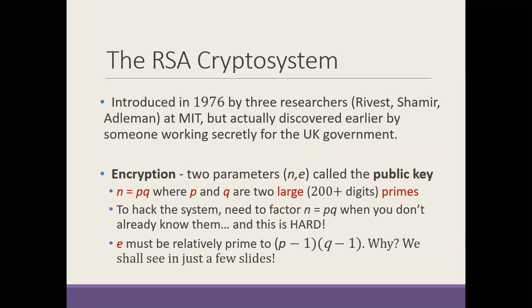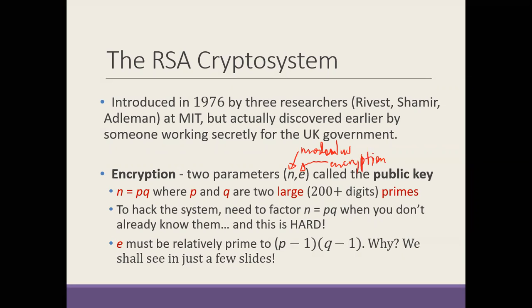Here's how RSA works. You have two parameters, n and e, that you call the public key. N is your modulus — the modulus you'll be working with. E is basically an encryption power: you raise something to that power e to encrypt, and you work modulo n. That's the public key. If we were all secret agents in this room, we would all have our own public key.